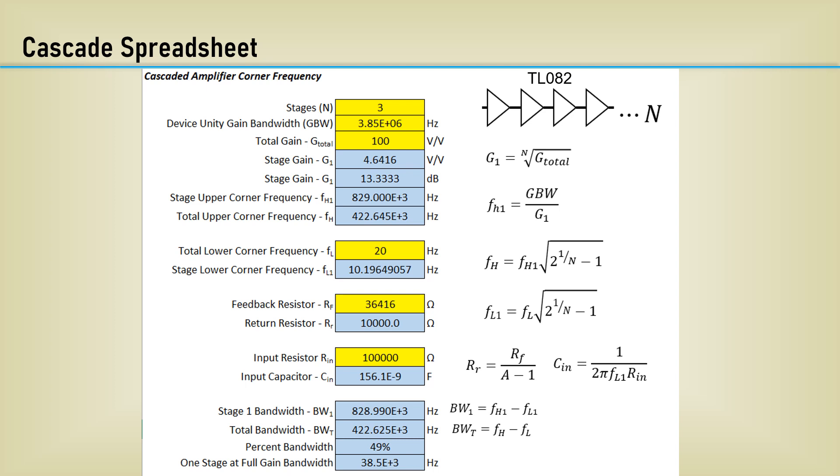I generated a spreadsheet to predict the performance. The datasheet unity gain bandwidth of the TL082 is 4 MHz, and I wasn't getting accurate correlation between PSPICE and the spreadsheet on the upper corner. So I tested the TL082 in PSPICE open loop. The model had a unity gain bandwidth of 3.85 MHz, so I plugged it in here. We desire a total gain of 100.